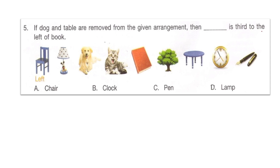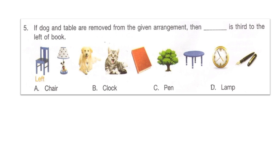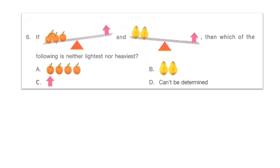Next question: if 'dog' and 'table' are removed from the given arrangement, then blank is third to the left of 'book'. Is it option A: chair, option B: clock, option C: pen, or option D: lamp? First, cancel out 'dog' and 'table'. Then find 'book' in the arrangement and look to its left. Counting three positions to the left of 'book', the right answer is option A: chair.